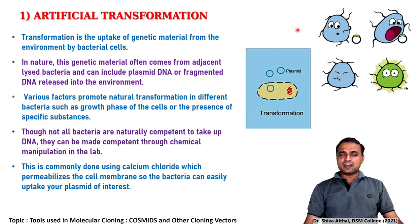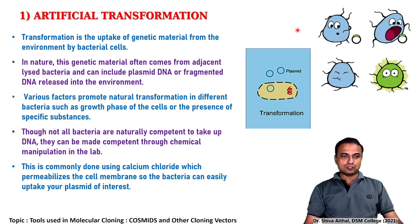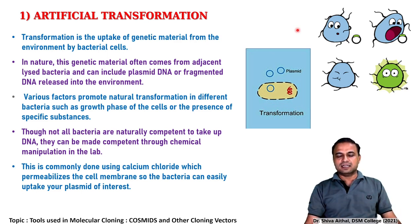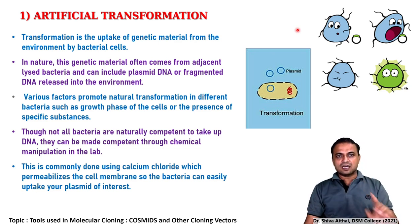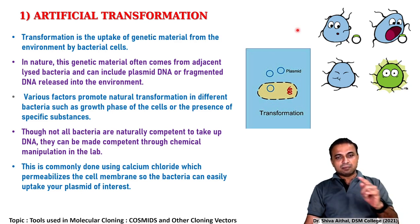Various factors promote natural transformation. Competence is a factor in the growth phase of a cell, though not all bacteria are naturally competent. Natural competence is not a property of each and every bacterium — though it exists across multiple species, not all possess it. But by this artificial transformation process, all bacteria can be made to uptake DNA; they can be made permeable to foreign DNA. Their cell wall can be made permeable through chemical manipulations in the laboratory.